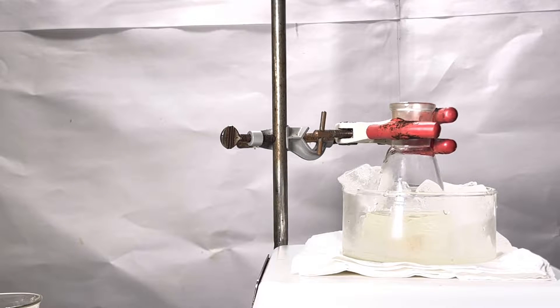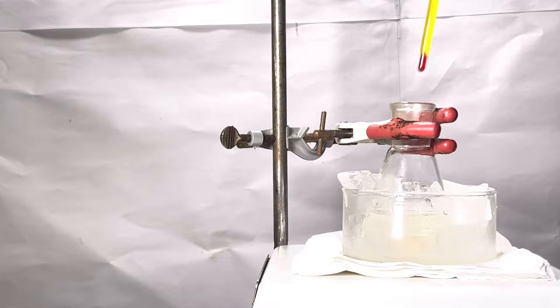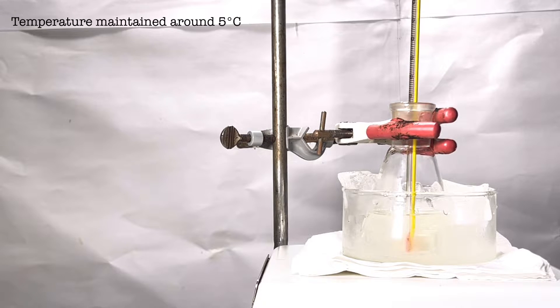Next, the flask is placed in an ice bath. A thermometer was placed in the Erlenmeyer to record the temperature. The temperature should be maintained around 5 degrees C. Once the solution is cooled to below 5 degrees C,